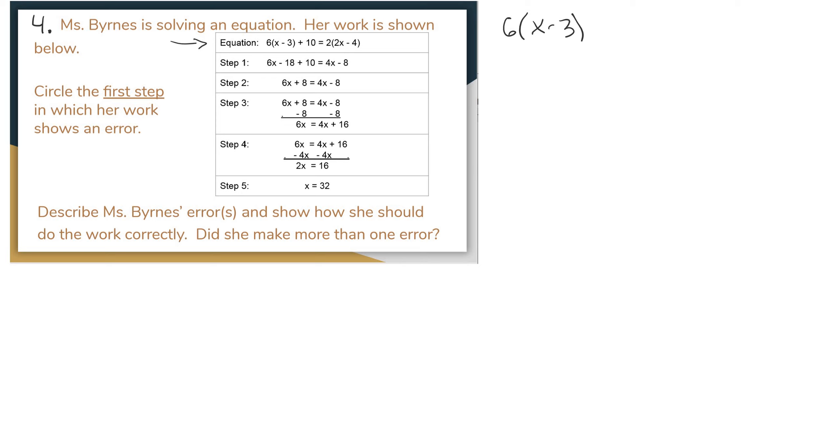It says 6 times the quantity x minus 3. We're going to take our answer, we're going to add 10. And that's going to equal 2 times the quantity 2x minus 4.